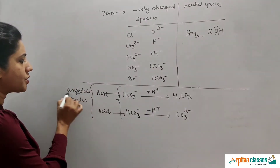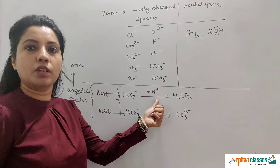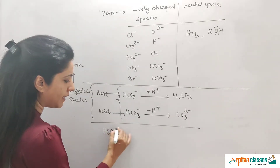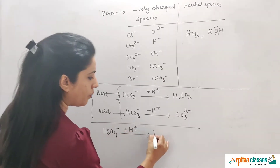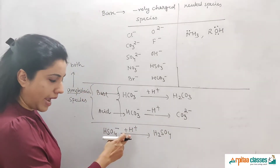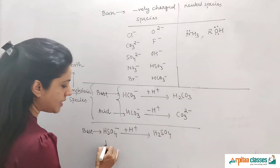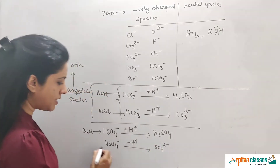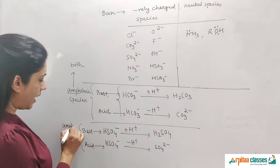The meaning of 'ampho' is 'both.' HSO4⁻ (bisulfate ion) when it accepts a proton converts into H2SO4 — acting as a base. When HSO4⁻ loses a proton it converts into SO4²⁻ — acting as an acid. Hence, HSO4⁻ is an amphoteric species.